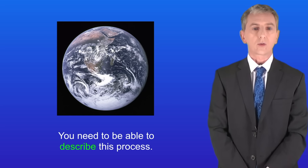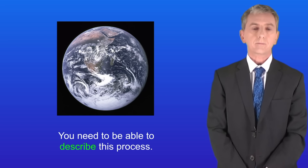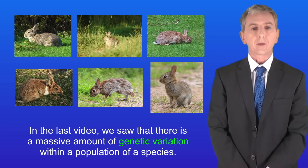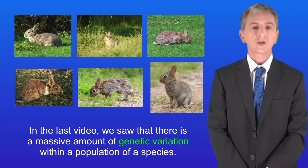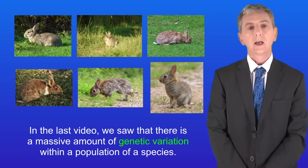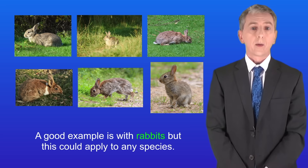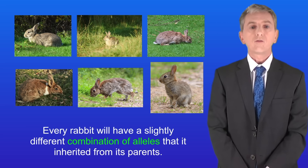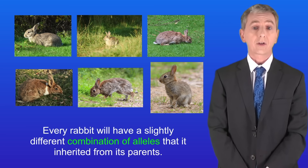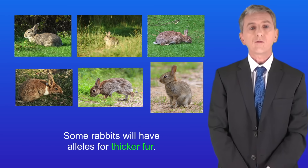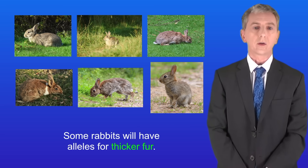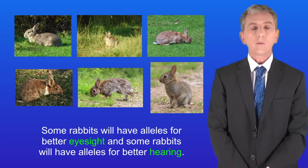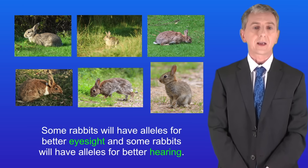Scientists call this process evolution by natural selection, and we're looking at that in this video. In the last video we saw that there's a massive amount of genetic variation within a population of species. A good example is with rabbits, but this could apply to any species. Every rabbit will have a slightly different combination of alleles that it inherited from its parents. Some rabbits will have alleles for thicker fur, some for better eyesight, and some for better hearing.